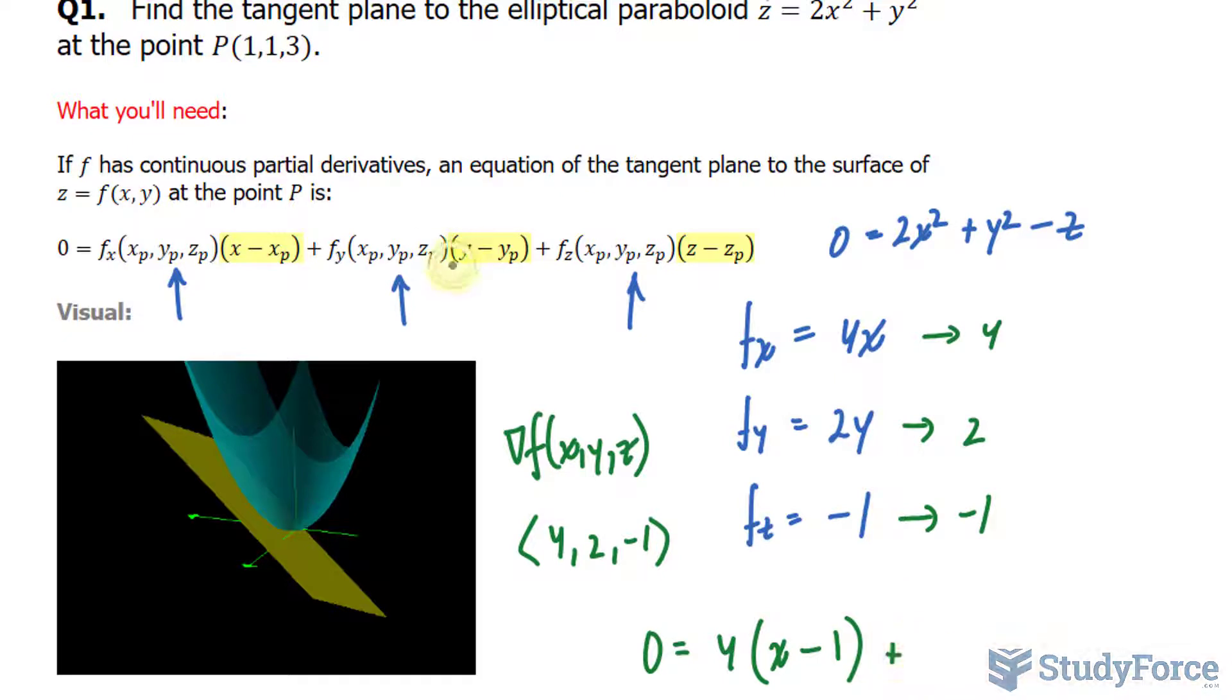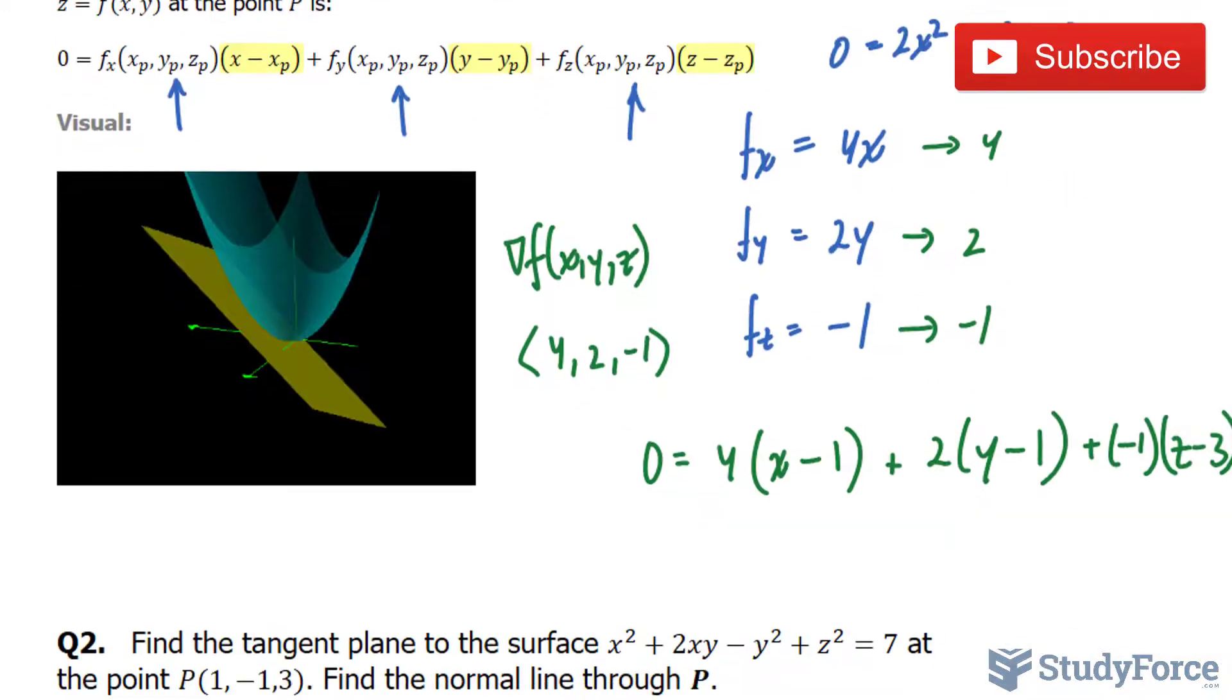Plus 2 bracket y minus 1, that's coming from there, plus negative 1 bracket z minus 3. If we clean this up, we'll have 4x minus 4 plus 2y minus 2 minus z plus 3.